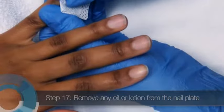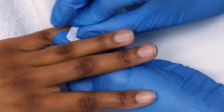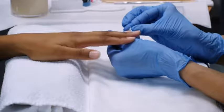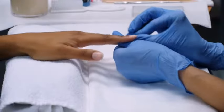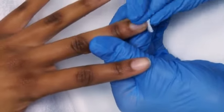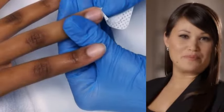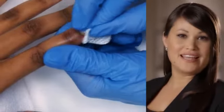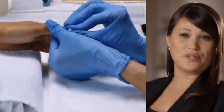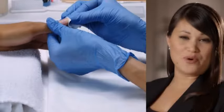Using a lint-free wipe saturated with alcohol, acetone, or polish remover, scrub the nail plate as though you were trying to remove a stubborn red nail polish. Don't forget to clean under the free edge of the nail plate. This is an important step in preparing the nail for polish. The cleaner you get the nail plate and surrounding tissues, the better your polish will adhere. So it's really important to be thorough here.